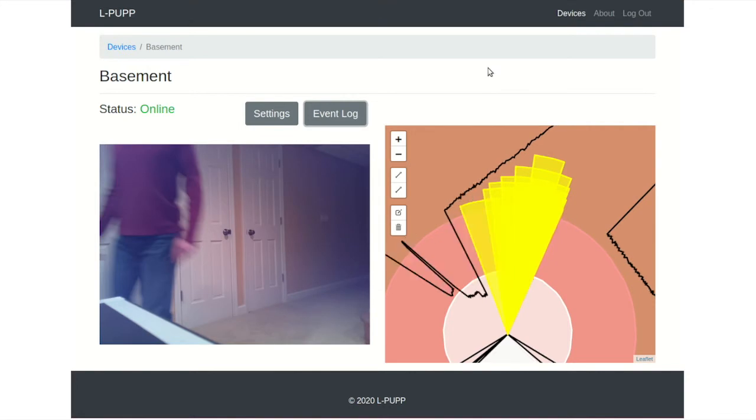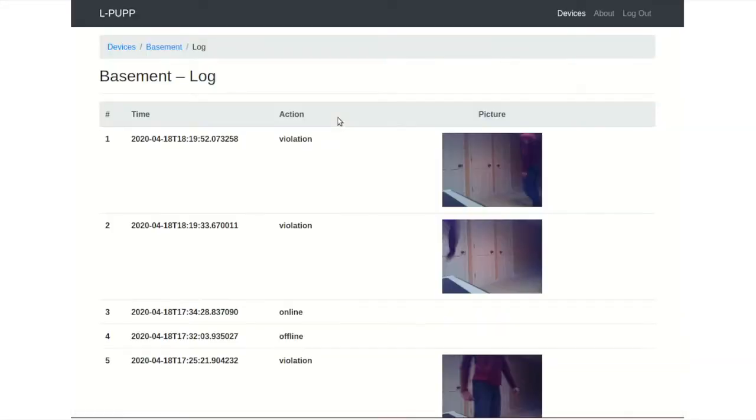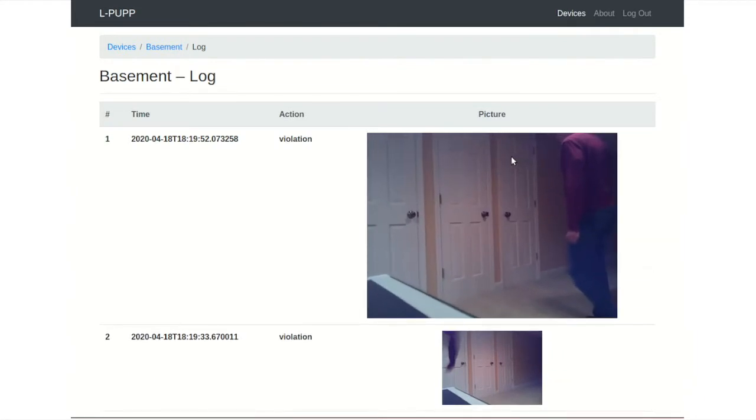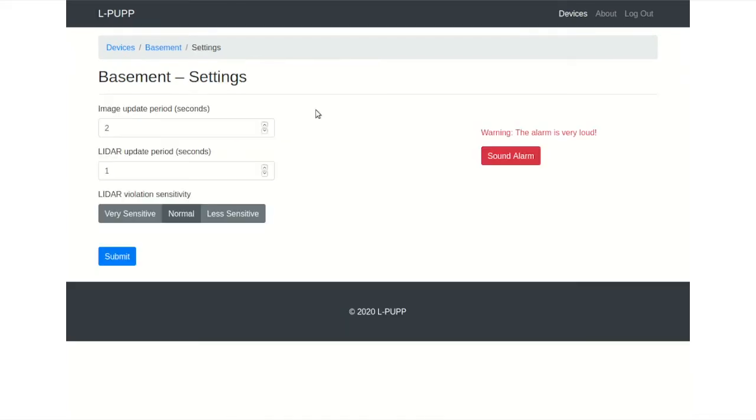All major device events, including area violations and online-offline events, are visible in the event log. Here we can see the violation that just occurred. We provide a timestamped report of the incident with a corresponding camera photo.